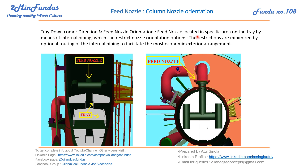The feed nozzle should be located in a specific area on the tray by means of internal piping. If we are not able to pass this feed onto the tray, we can go for internal piping. This kind of arrangement can be planned in consideration with the column vendor. If we want to orient the nozzle to one side but the tray is on the other side, we can always do internal piping for that.